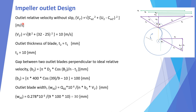Outlet relative velocity without slip: V2' = √(Ca2² + (U2 − Cw2')²) = 10 m/s. Outlet blade thickness T2 = T1 = 10 mm. Gap between two outlet blades perpendicular to the ideal relative velocity: B2 = (π × D2 × cos β2 / N) − T2 = 100 mm. Outlet blade width: WD2 = Qd2 × 10⁶ / (N × B2 × V2') = 30 mm.